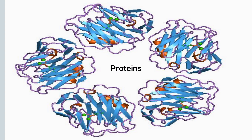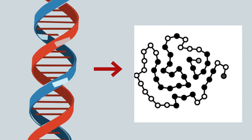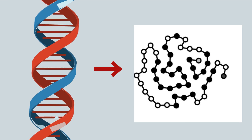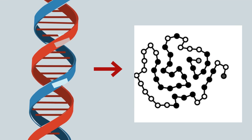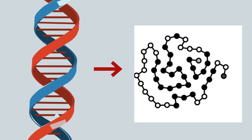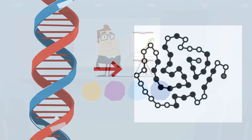Proteins are then used by the body for structural support, to create enzymes, to send messages in the form of hormones, and many other jobs throughout the body. So there we go — how proteins are created through transcription and translation.